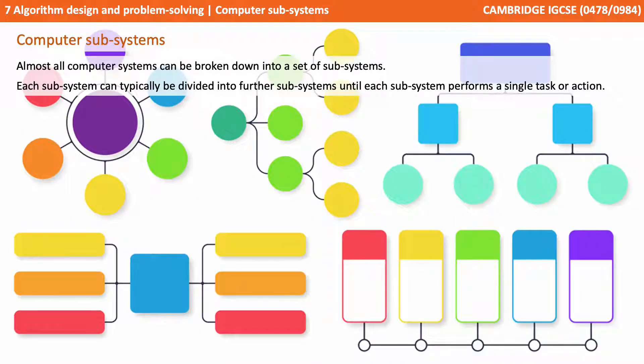Almost all computer systems can be broken down into a set of subsystems. Each subsystem can typically be divided into further subsystems until each subsystem performs a single task or action.